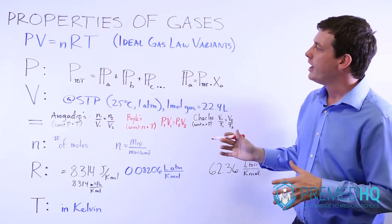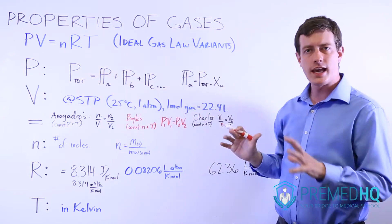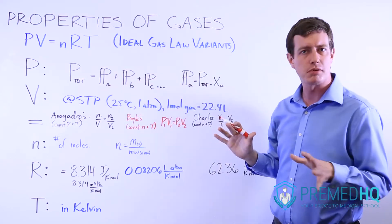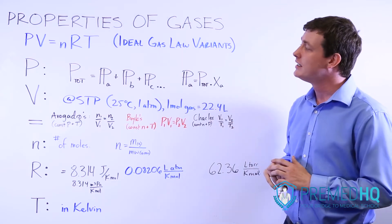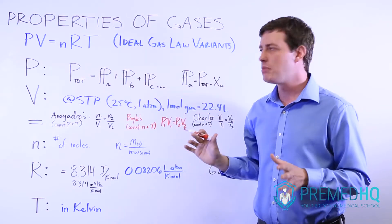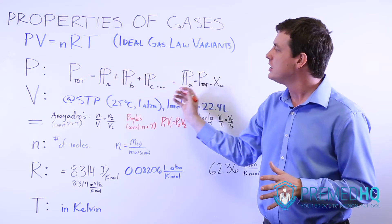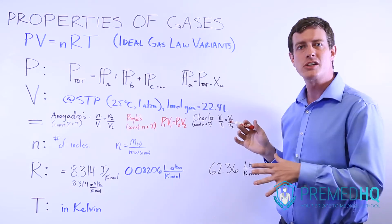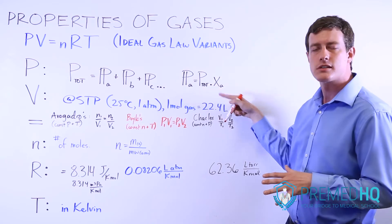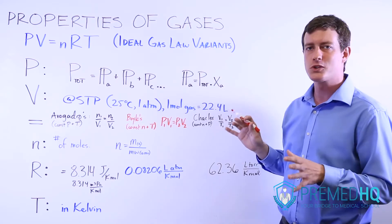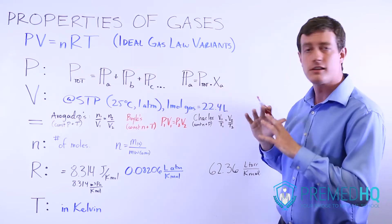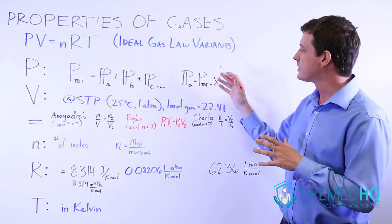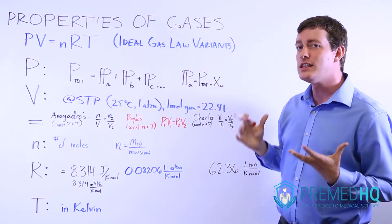We'll start with pressure. The total pressure of a gas is the sum of the partial pressures of all of the gases in that mixture. I use the paragraph symbol for partial pressure — it simplifies the discussion. You can find the total pressure of a gas mixture by looking at the partial pressures of each component. Then we get to Dalton's law, which says that the partial pressure of any one gas in a mixture is equal to the total pressure times its mole fraction.